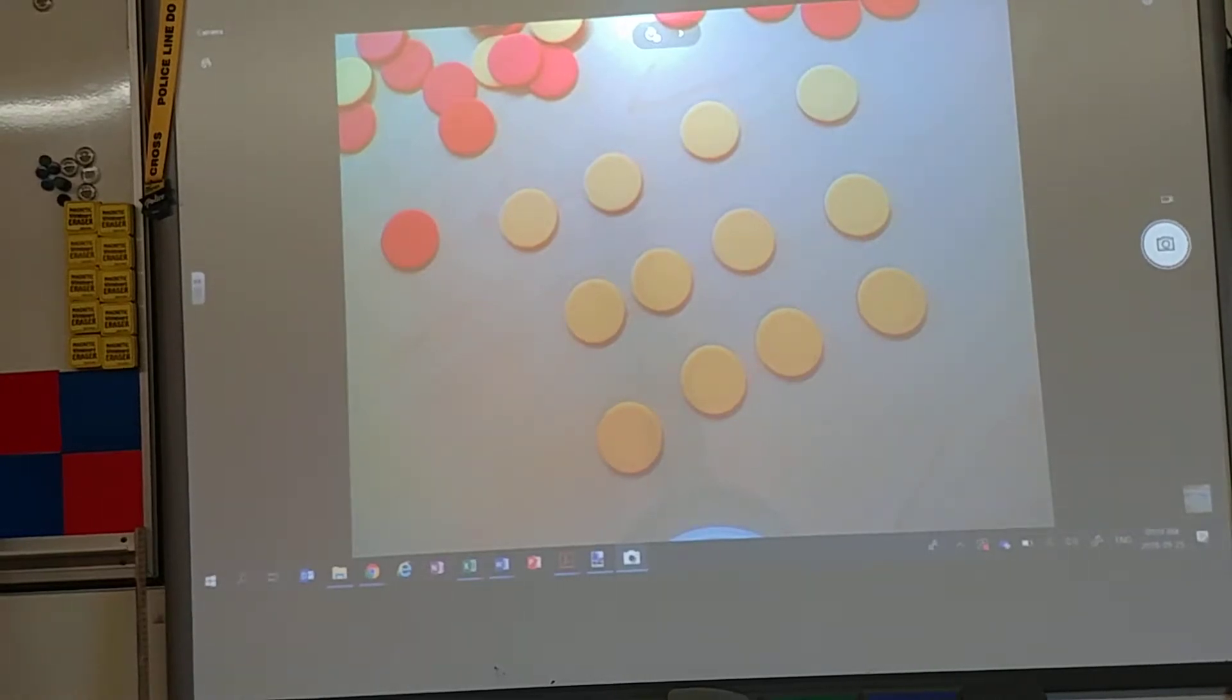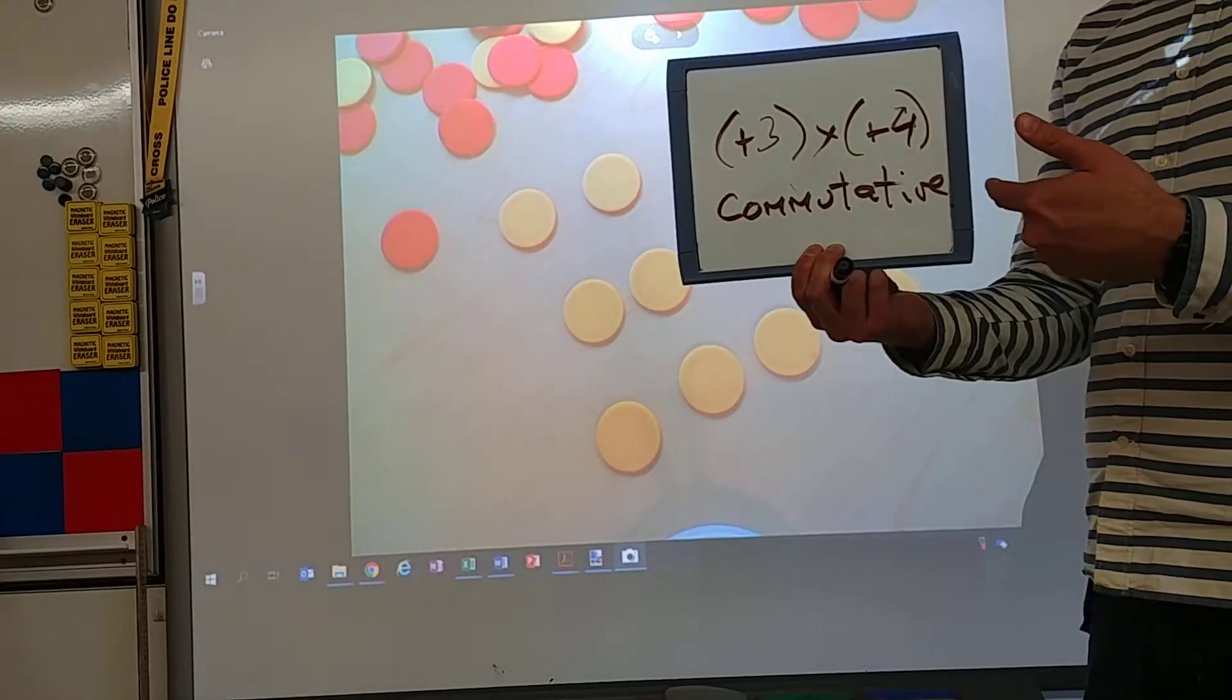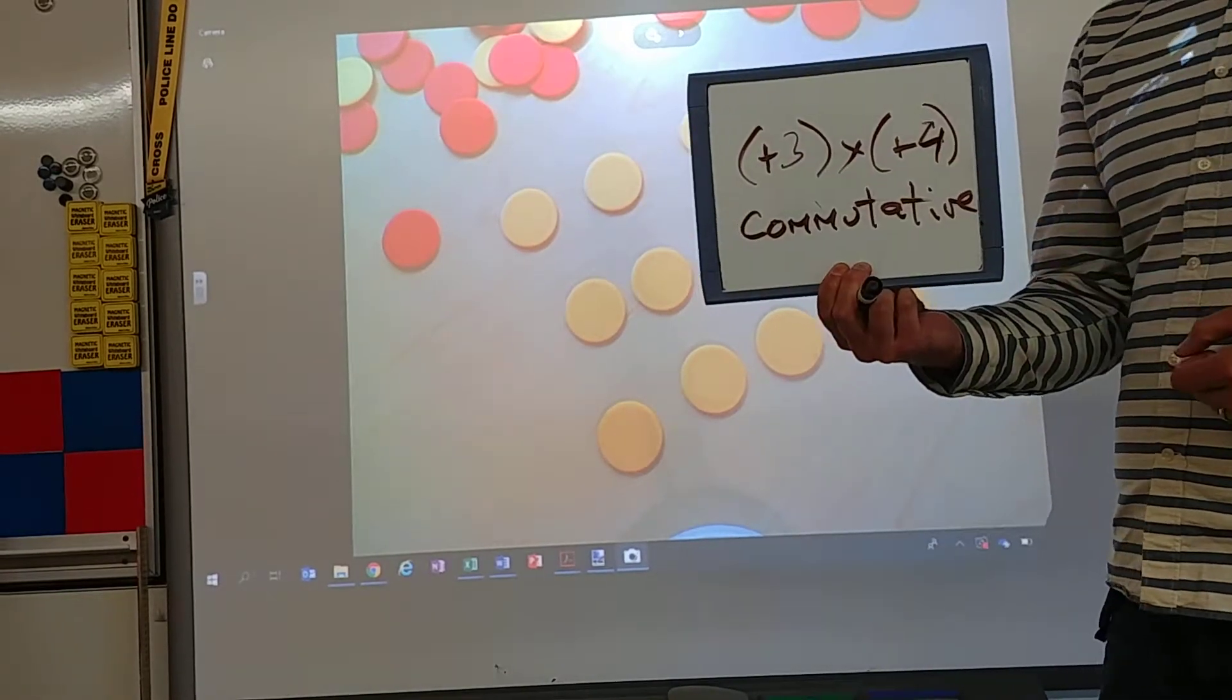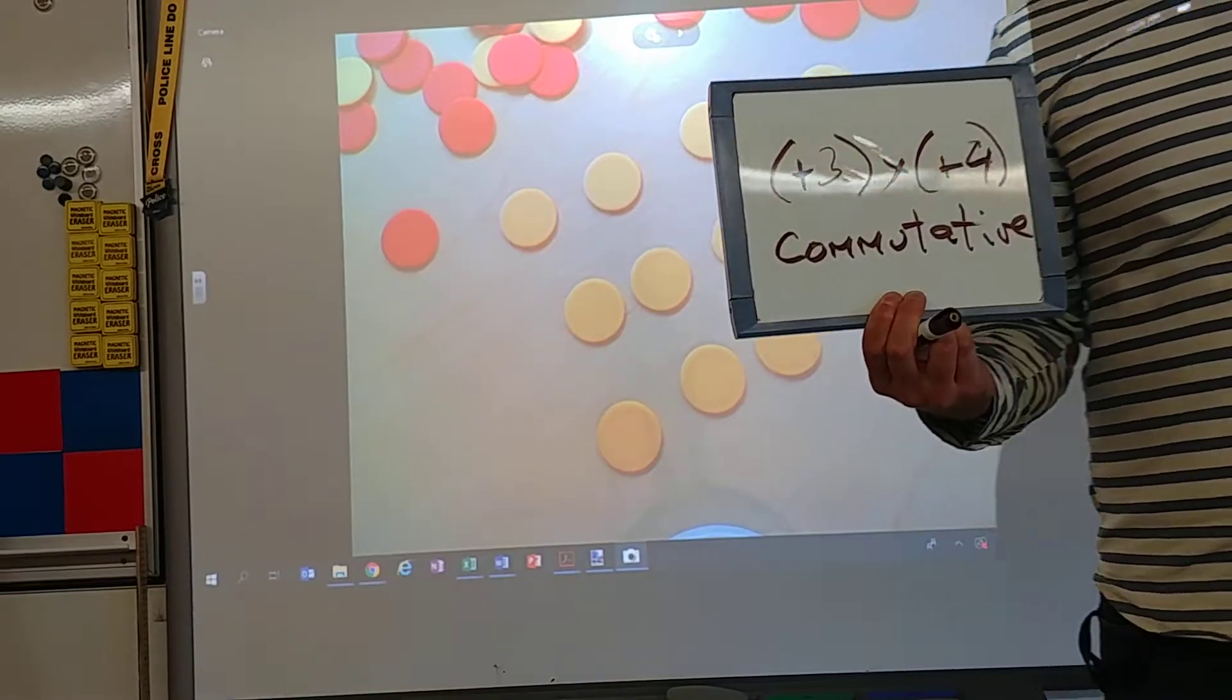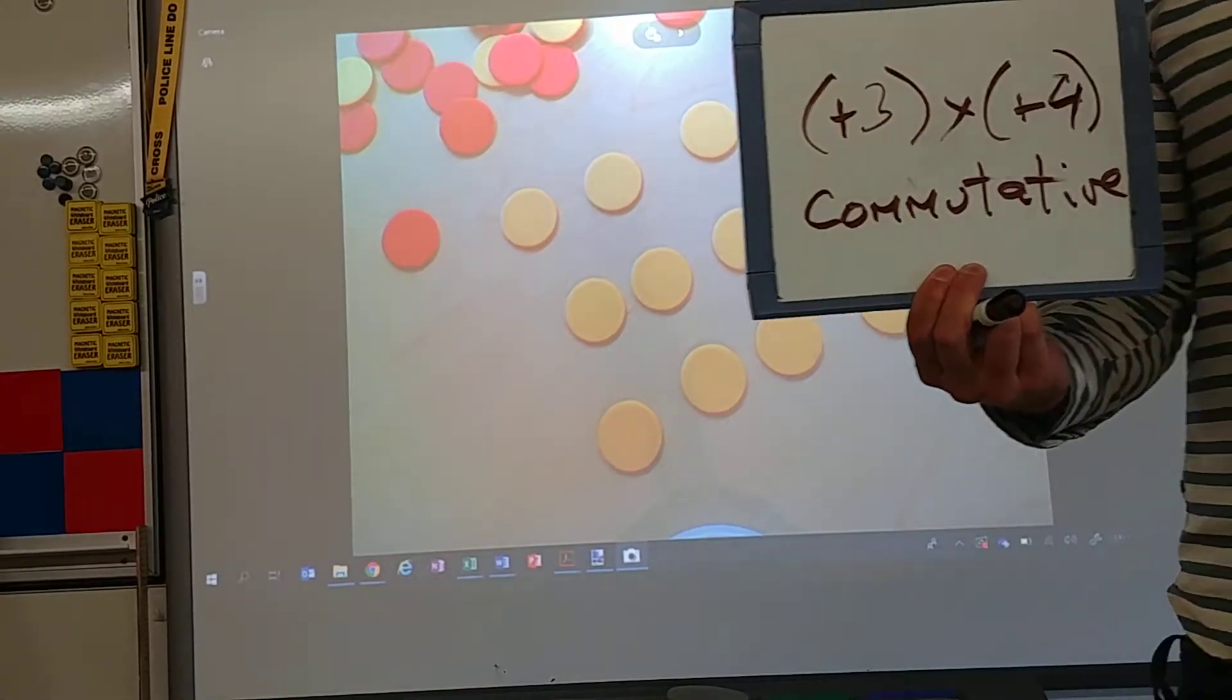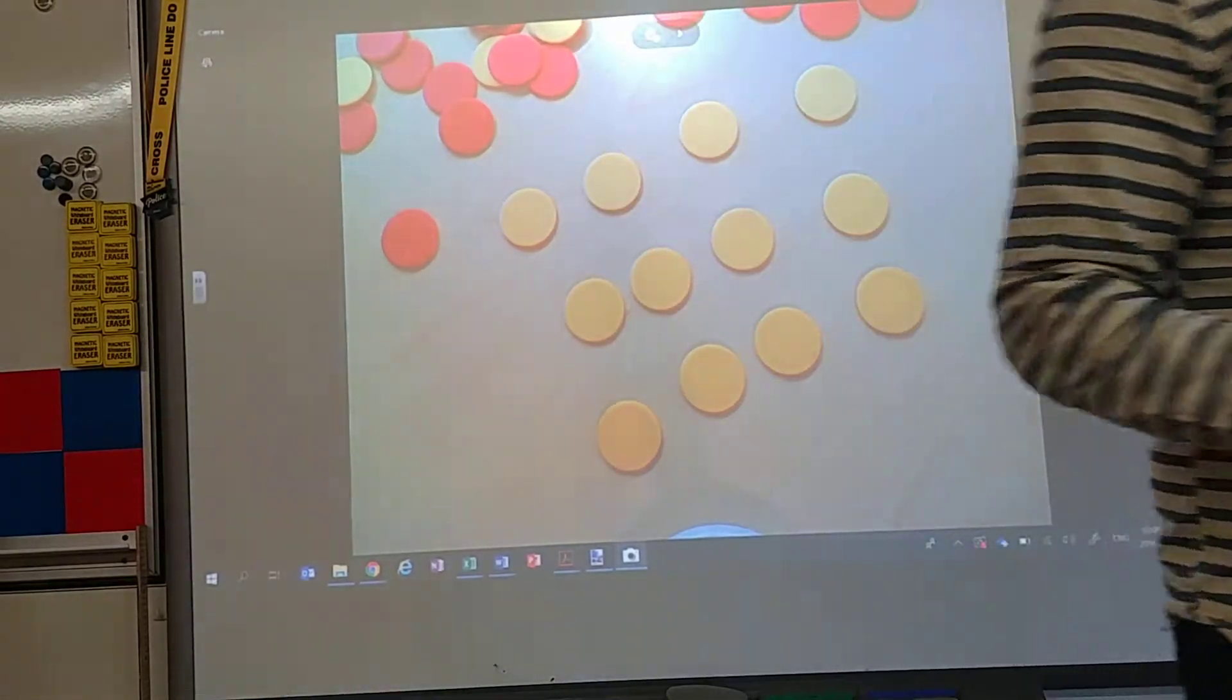Does it matter? Does it matter if I put the 3 times the 4 or the 4 times the 3? No. No, it does not matter. That is called the commutative property. You can swap them. Doesn't matter. Doesn't change a thing.